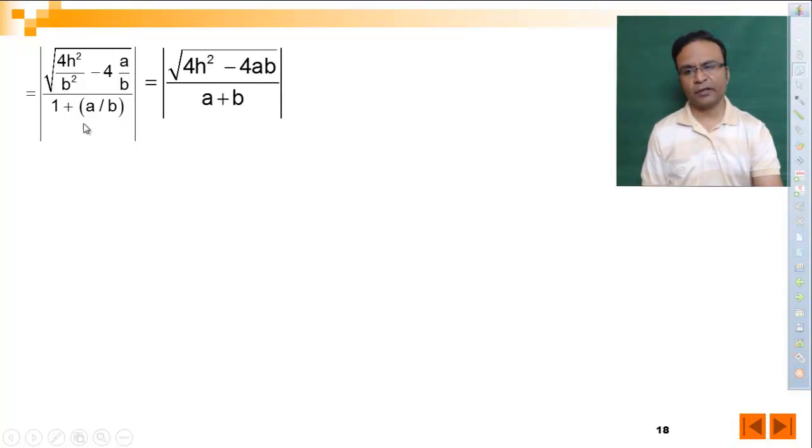Simplify this. Take LCM b on top and bottom, b cancels. Getting 2 outside, we will get 2 times square root of h square minus ab upon mod a plus b.